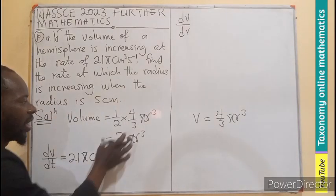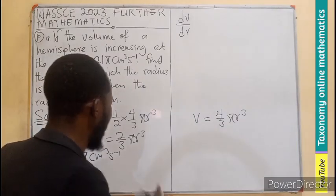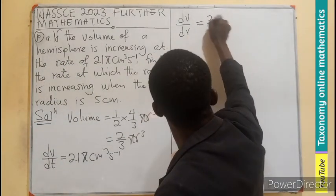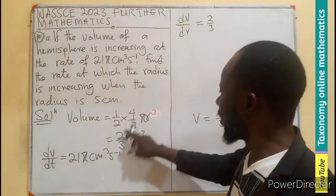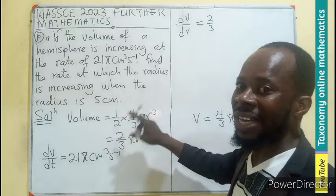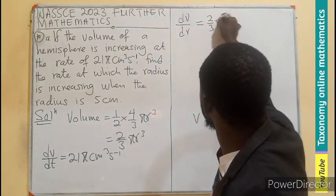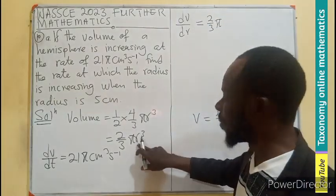The differentiation of what? The volume with respect to what? R. So in that case, we are having 2/3, which is the constant. If we differentiate this, we are differentiating with respect to only R. So π and this 2/3 are constants.